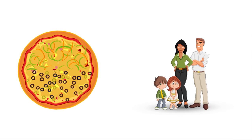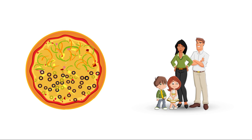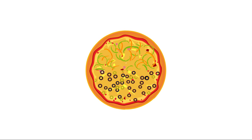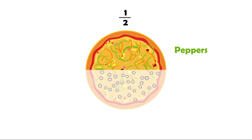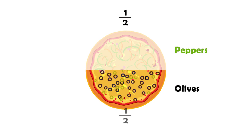Sam's family all love pizza, but they don't agree on toppings. So they ordered a pizza with peppers on one half and olives on the other half.